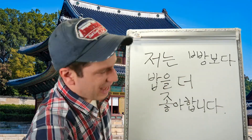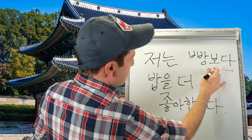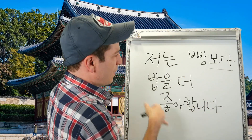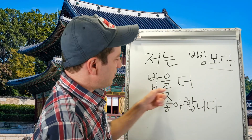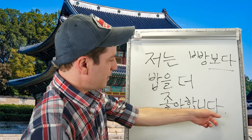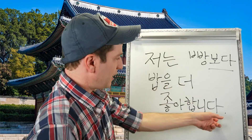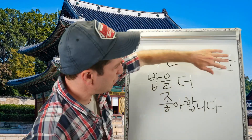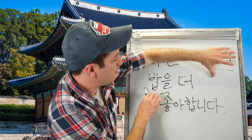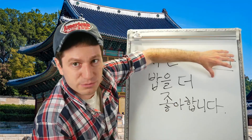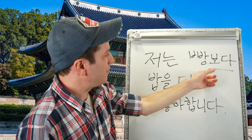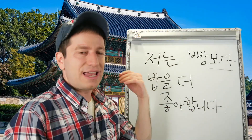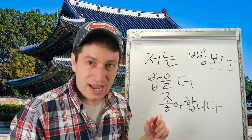Another example: 저는 빵보다 밥을 더 좋아합니다. So as for me, compared to bread, I like rice more — 밥을 더 좋아합니다. 더 좋아합니다 means 'I like more,' and 빵보다 gives the comparison. So the full sentence means: I like rice more than bread.